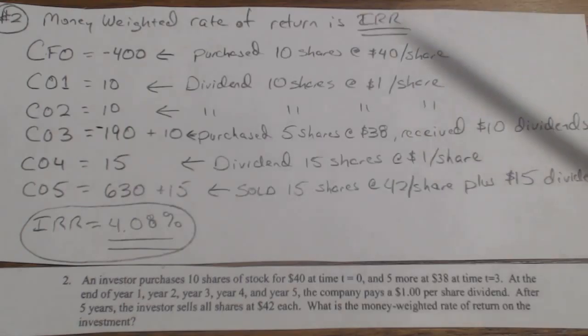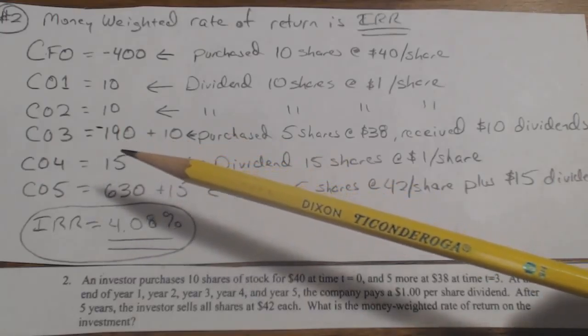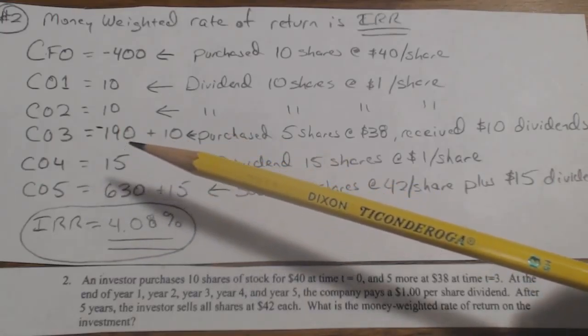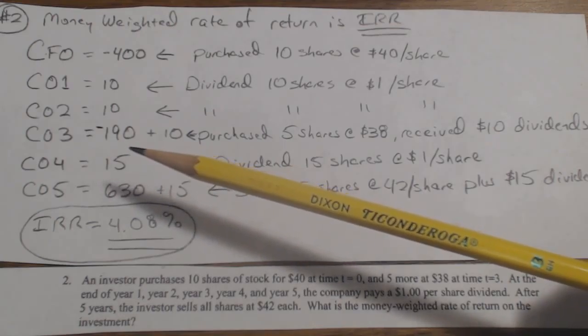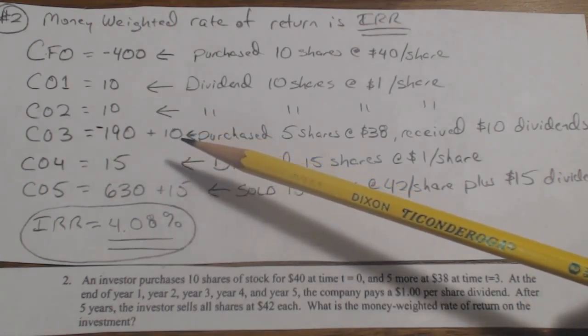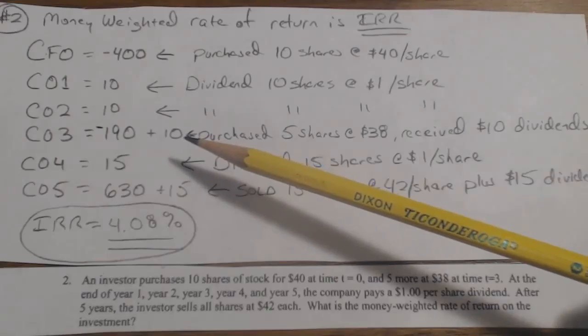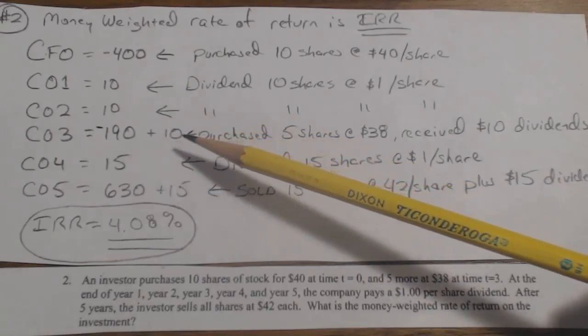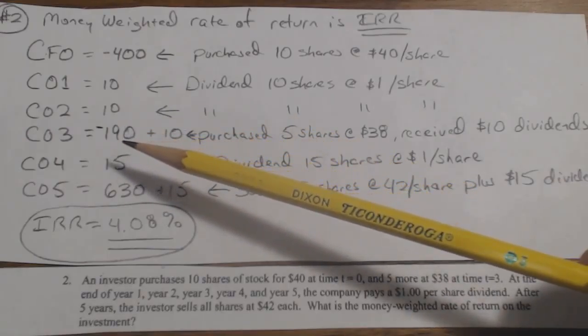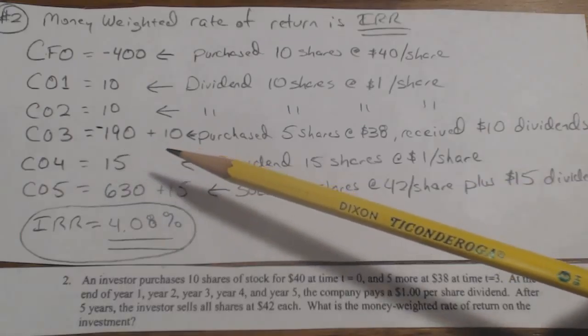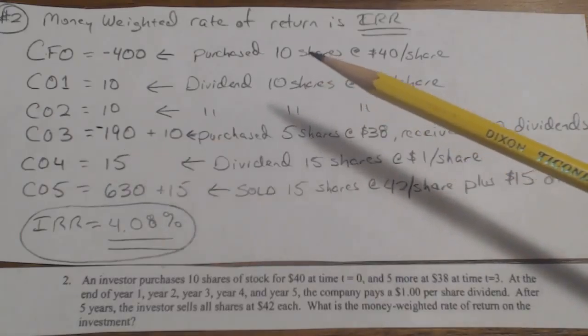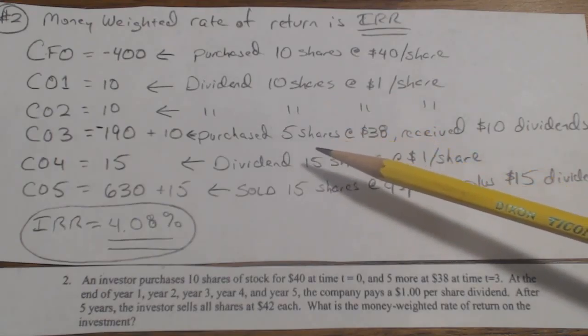Now, it says at T3, you buy 5 more shares at $38, so that's $190. But you're actually purchasing that at the end of the period, so you don't really get the dividend for those. But you do get the dividend for the first 10 shares. So that's $10 here. That's an inflow. The $190 paying for the stock is an outflow. So if you add those together, it's actually negative $180 right there.